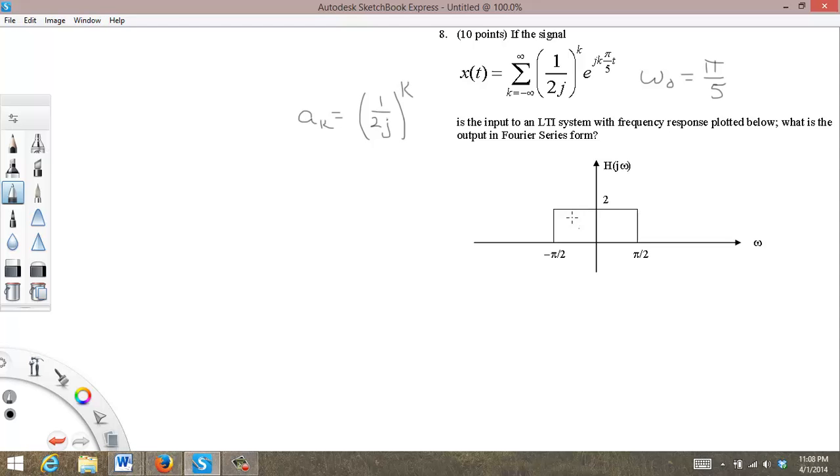If we look at our system here, it's either 2 or it's 0. So h of j omega is equal to either 2 or 0. It's 2 when omega is between minus pi over 2 and pi over 2. So the absolute value of omega is less than pi over 2, and it's 0 otherwise.